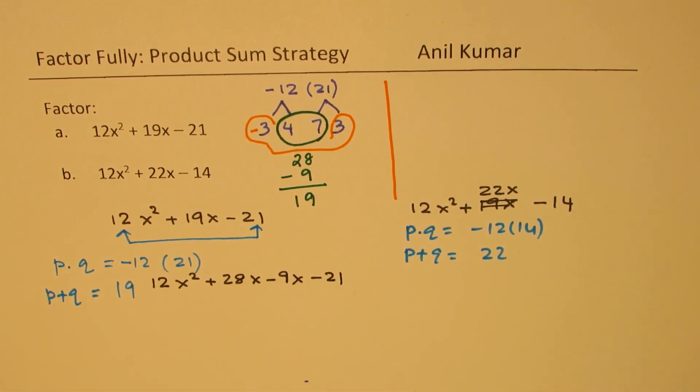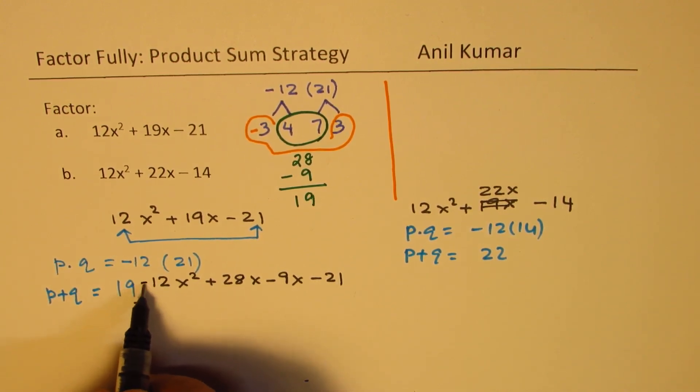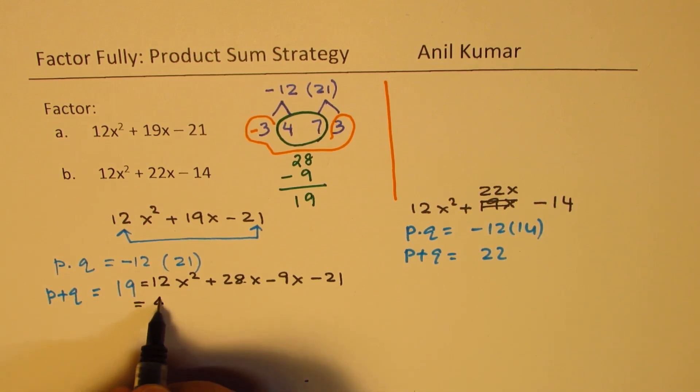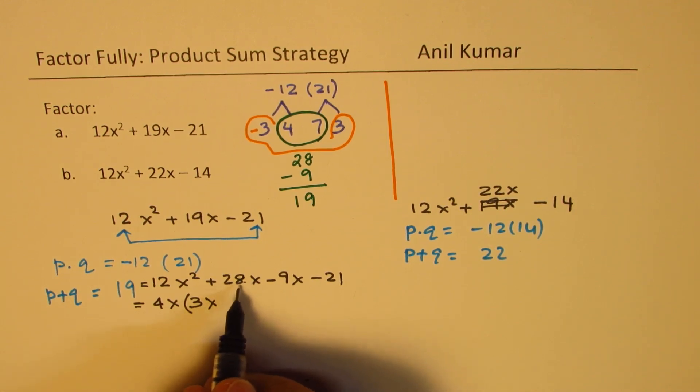So we could write this trinomial as 12x² + 28x - 9x - 21. Does it make sense to you? Now you can combine the first two terms. What is common factor between these two and these two terms? So here we see that 4 is common, 4x. So we have 4x here. We have 3x. That is 4 times 3. And 7 times 4 is 28. So plus 7.